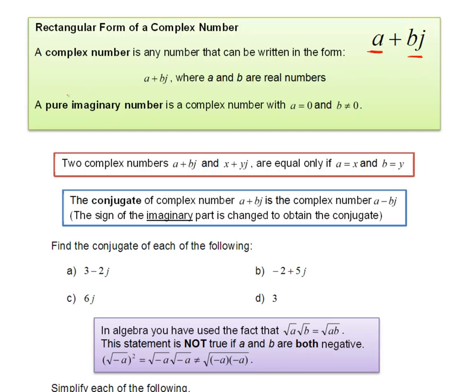A pure imaginary number, which she talks about down here, is when the a is equal to zero, so we just have the bj. a and b here are real numbers, so we end up with things that look like we see down here further: 3 minus 2j, negative 2 plus 5j, and things like that.